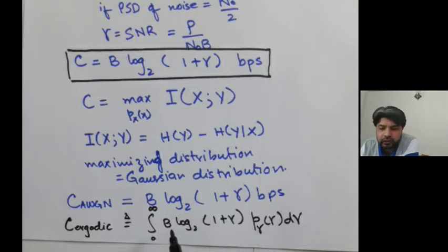Assuming that the bandwidth would be fixed for the transmission, this C ergodic would always be less than or equals to C AWGN.